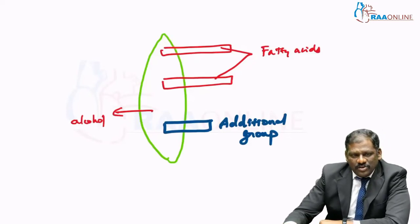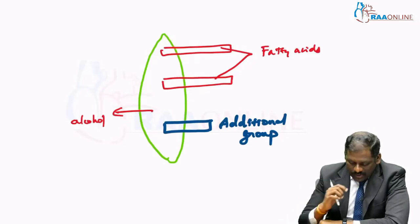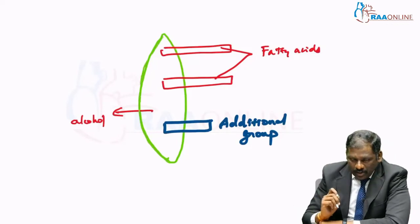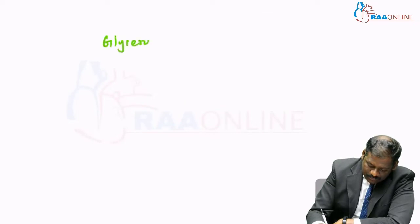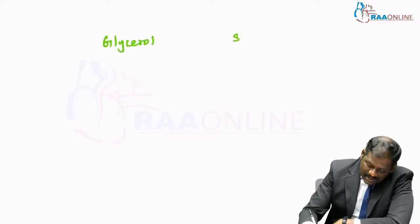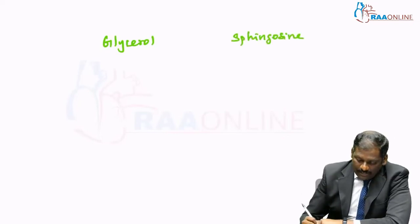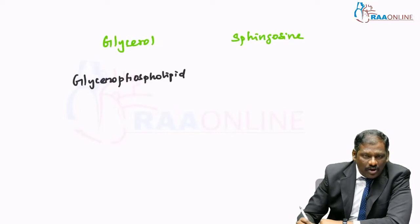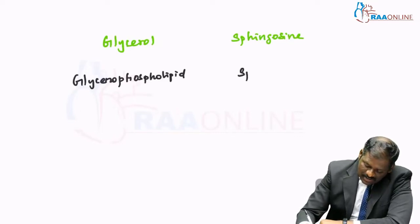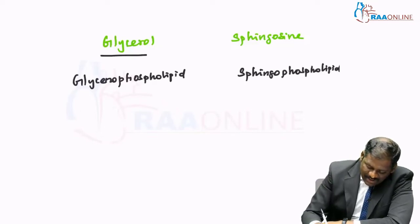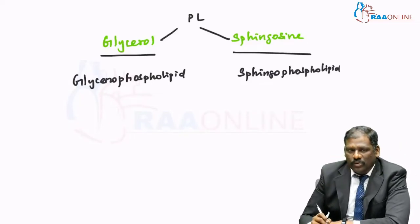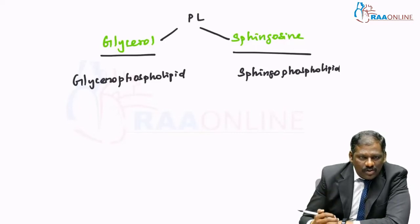Now we are going to see the classification of phospholipids. You classify phospholipids with respect to the alcohol which is present as the backbone. This alcohol could either be a glycerol or a sphingosine. If the central alcohol is glycerol, then this becomes a glycerophospholipid. If the central alcohol happens to be sphingosine, then this is called a sphingophospholipid. So the classification of phospholipids is based upon the alcohol present as the backbone.